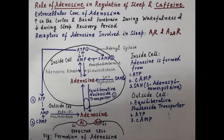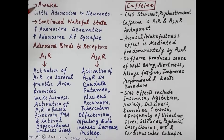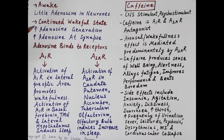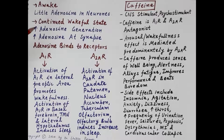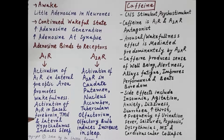During wakefulness, there is little adenosine in neurons. Continued wakefulness increases adenosine generation at the synapse. Activation of the A1 receptor in the lateral preoptic area promotes wakefulness, while activation of A1 receptors in the basal forebrain, tuberomammillary nucleus (TMN), and lateral hypothalamus induces sleep.